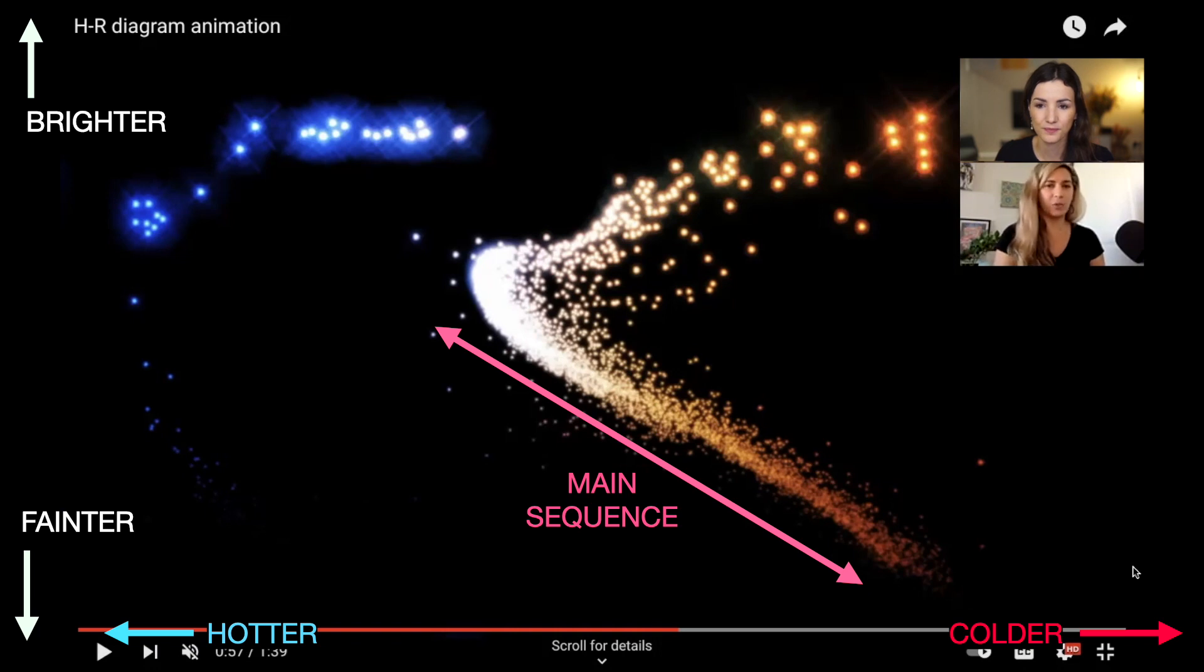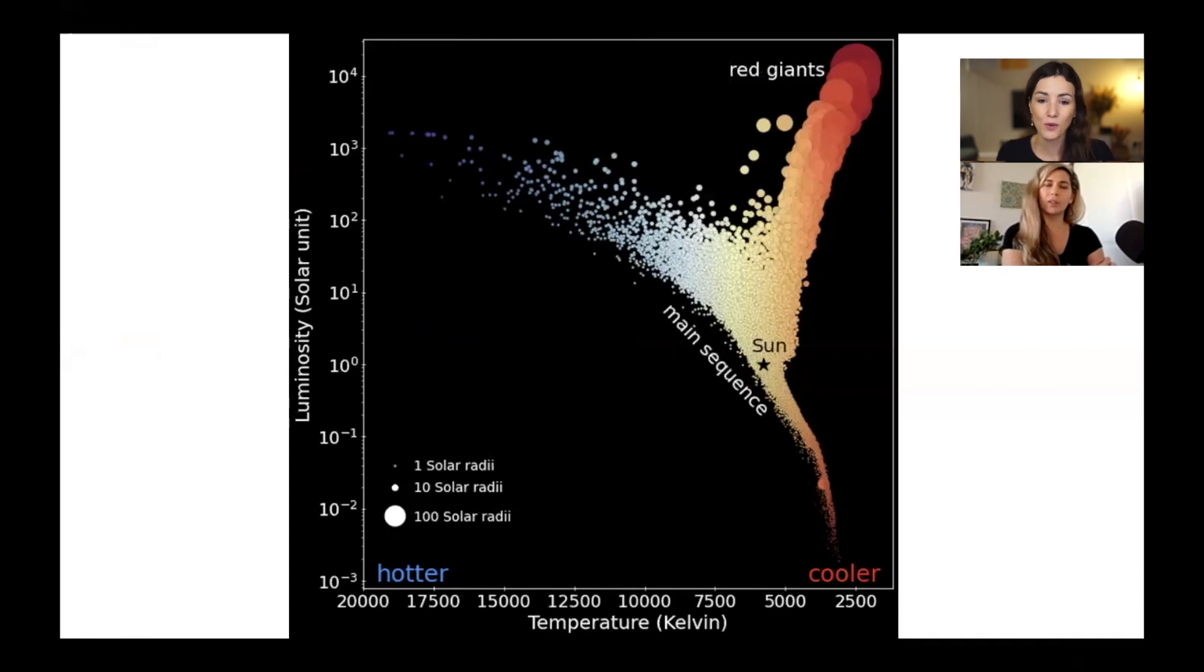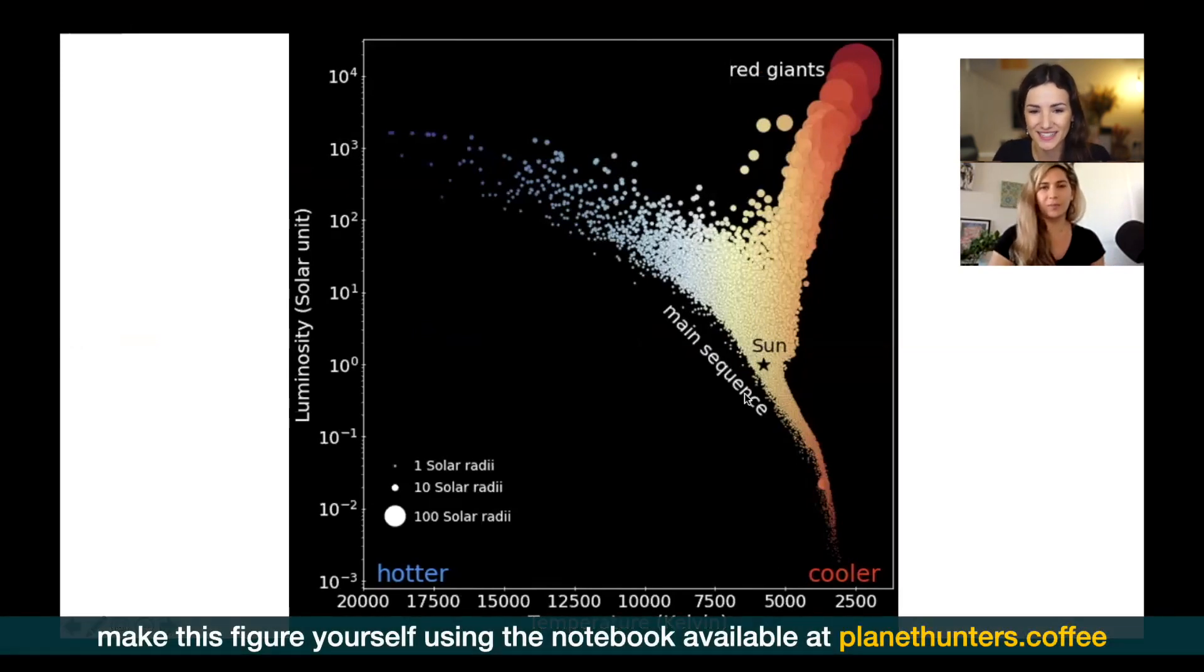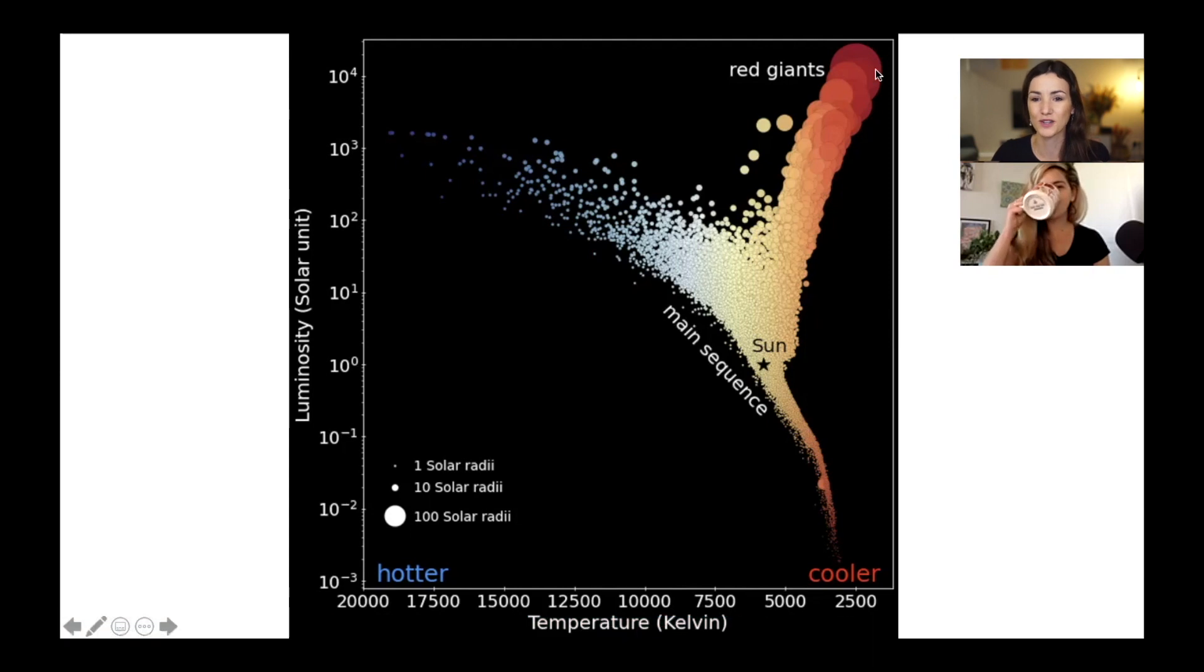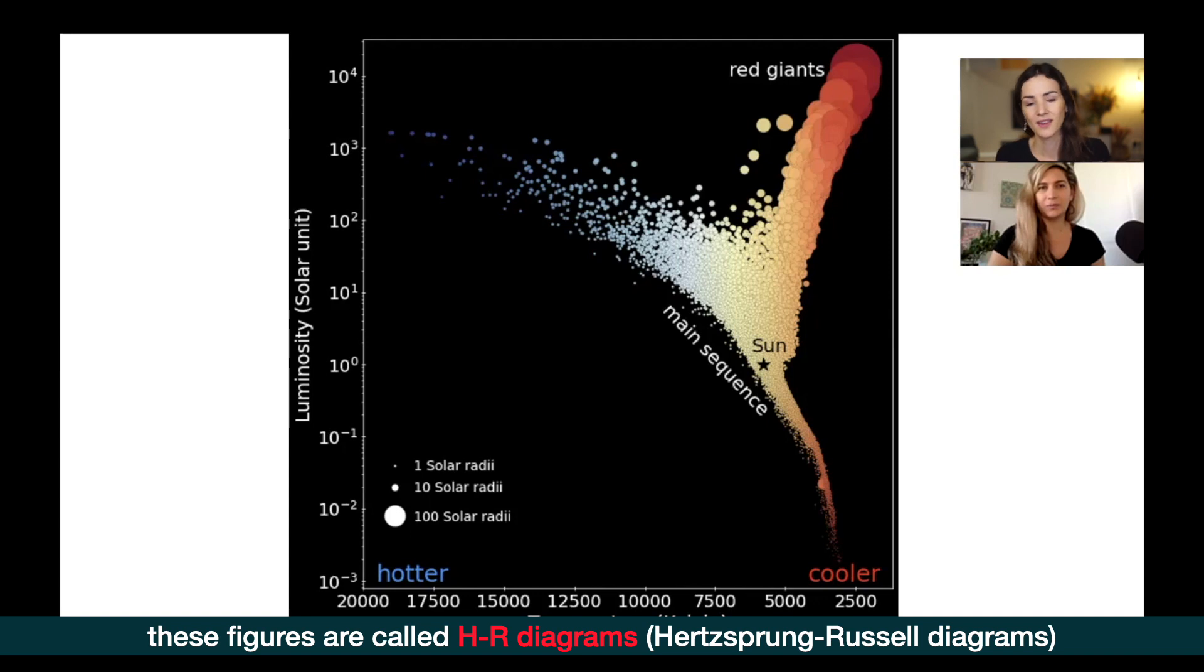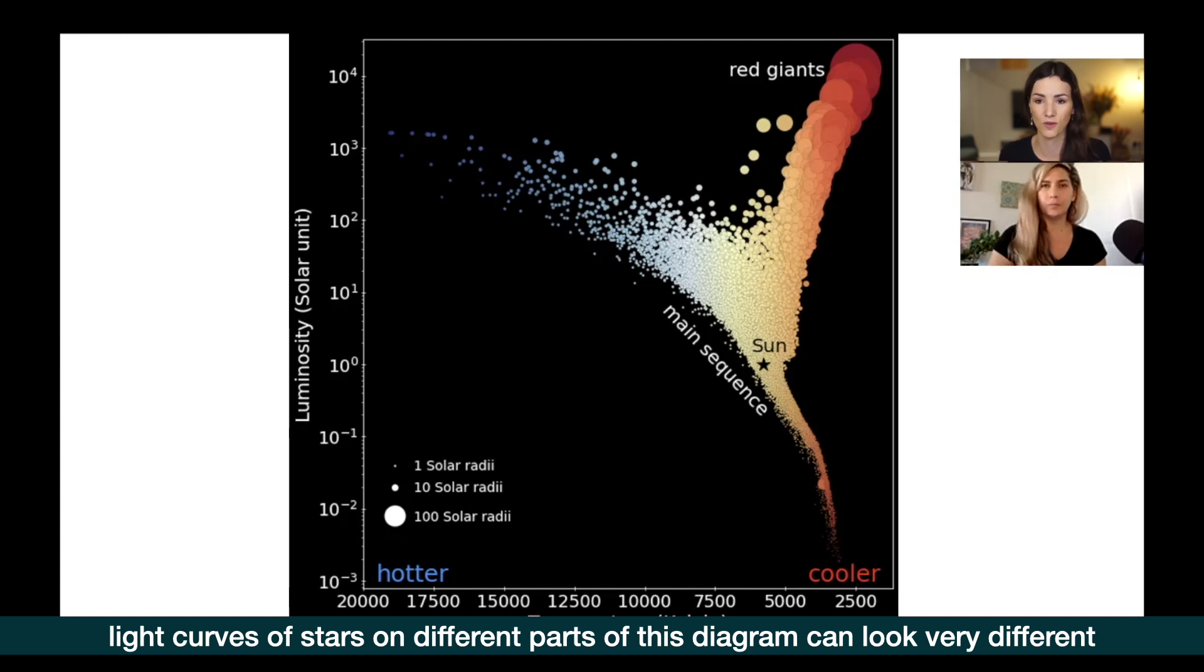So where exactly does our sun fall then on this main sequence? Yeah, that's a really good question. And actually I have another version of this plot that you can hopefully see now where we can see the location of the sun and you can see it marked on by that star there. And you can see kind of where it falls on that main sequence. Our star is still in the middle-aged phase of its life. So it's still on that main sequence. It hasn't moved off and zoomed off to become one of those much larger stars in the top right hand corner. And the reason why I'm showing you this figure here, this HR diagram, it's the Hertzberg-Russell diagram, it's because the light curves look different depending on the properties of the star.